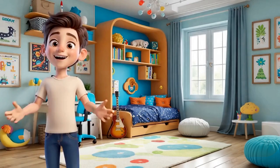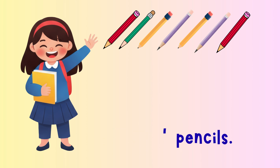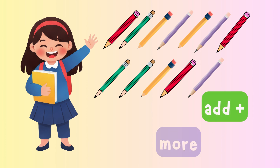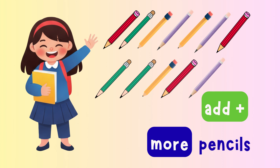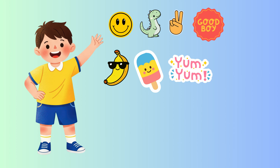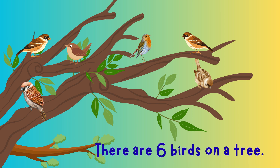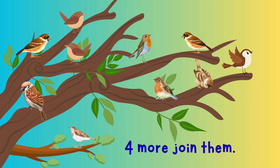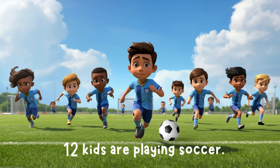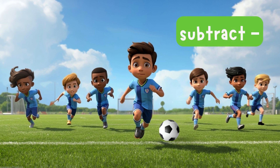Clue word practice. I'll read some sentences — you tell me if we should add or subtract. Mia has 7 pencils. She buys 5 more. That's add — more pencils. Ben has 10 stickers. He gives 3 to his friend. That's subtract — he gave some away. There are 6 birds on a tree, 4 more join them. That's add. 12 kids are playing soccer, 5 go home. That's subtract. Good listening!